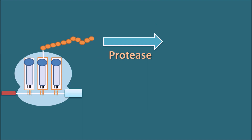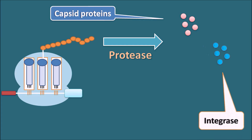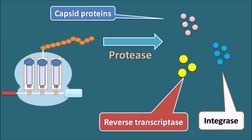This protease enzyme will cleave this viral peptide chain into both structural as well as functional proteins. Few of the proteins formed include capsid proteins, which are structural proteins forming an envelope around the nucleic acid material. This protease enzyme can also produce functional proteins like integrase enzyme as well as reverse transcriptase. In this way the protease enzyme is very important for preparing both structural and functional proteins of the viral cell, which are then assembled, packed, and released as new virions.